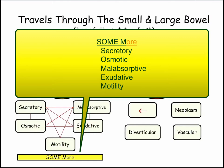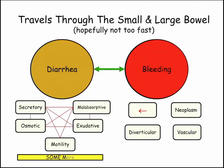Look at the SOME mnemonic: Secretory, Osmotic, Malabsorptive, Exudative, and Motility. That helps organize things, but look at all those overlapping lines — it's an artificial distinction. People with Crohn's also have malabsorption and motility issues. Gastrinomas inactivate lipase and cause enterocyte damage — that's malabsorptive. These are useful but impure categories.